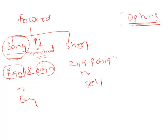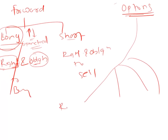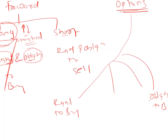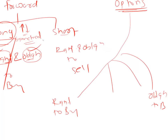The difference with options is that it breaks down this forward into two parts. In options we can have four possible sides: we can have only a right to buy, we can have only an obligation to buy, we can have only a right to sell, or we can have only an obligation to sell.